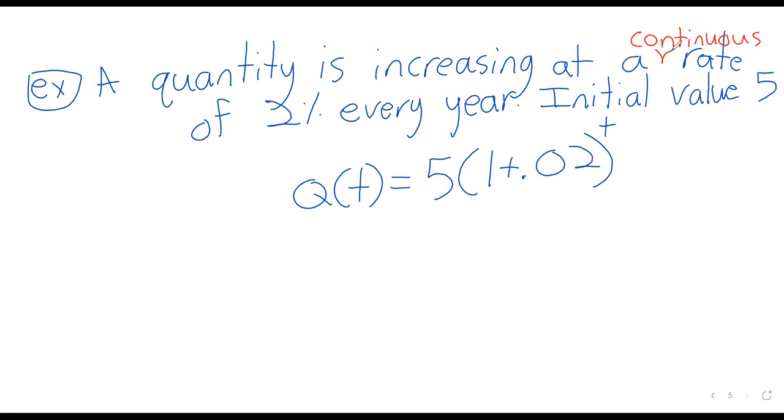If I now throw in the word continuous, suddenly our exponential function looks different. We still have this initial value, but when we're given a continuous growth rate, that number e goes in the base, and the growth rate, which is still 2%, 0.02, goes into the exponent.